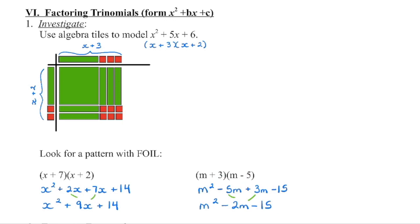And the same thing happens up here — so this 6 is a product of those 3 and those 2. In our trinomial, b is the numerical coefficient in front of that x term. So in this example, 9 is the numerical coefficient, and we can see that this 9 is a result of adding together the 2x plus the 7x. 2x is the outside product and 7x is the inside product.